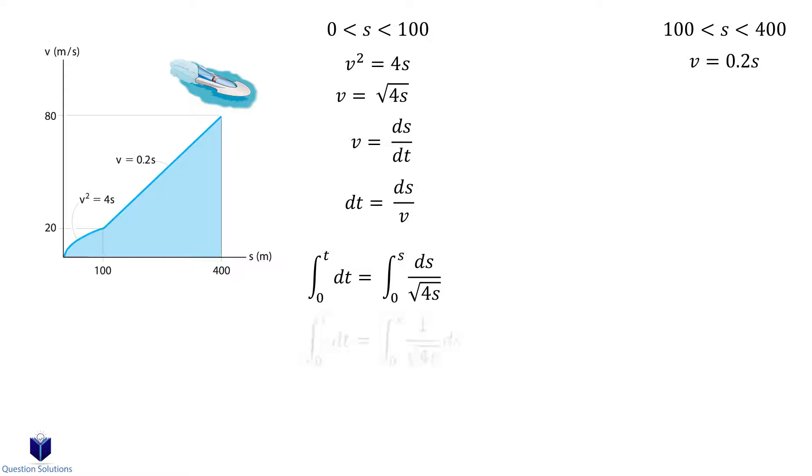The lower bounds are zero because s equals zero when t equals zero as stated in the question. Solving the integral gives us an equation for t but we need it for displacement so let's write this equation by isolating for s. Now we get a displacement equation with respect to time.